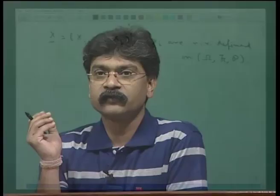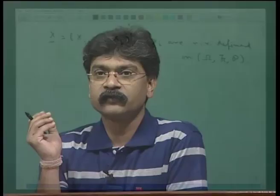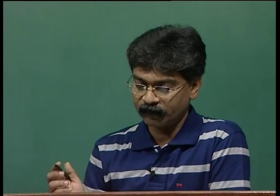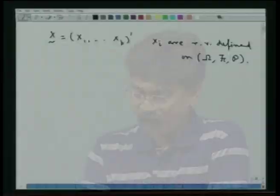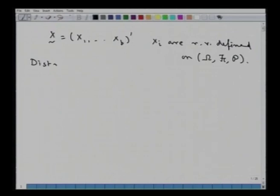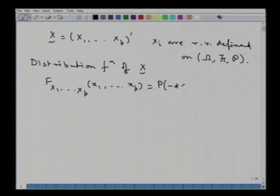Some basic concepts of multivariate analysis will involve defining some simple concepts. We will make a distinction between discrete multivariate random vectors and continuous multivariate random vectors. We define first the distribution function. The distribution function of this multivariate random vector x is defined as F(x1, x2, ..., xp) = P(−∞ < X1 ≤ x1, ..., −∞ < Xp ≤ xp). This is how a distribution function of a multivariate random variable is defined.